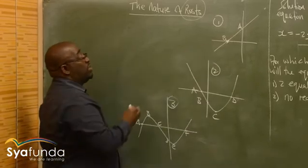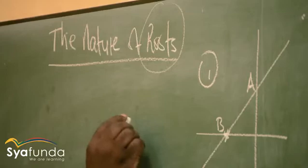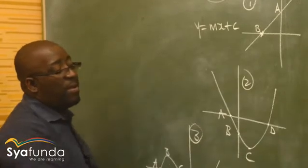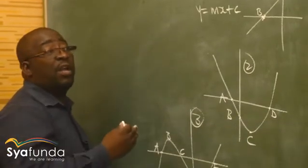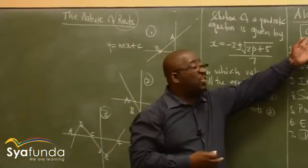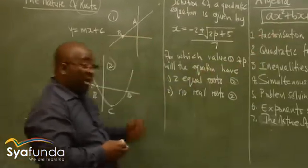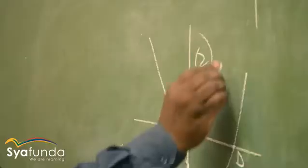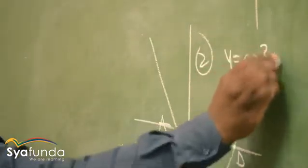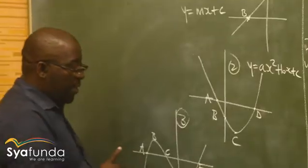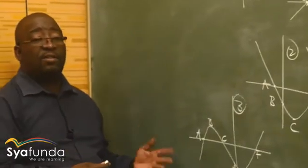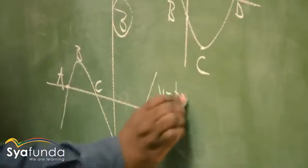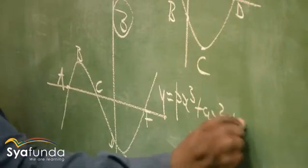This straight line graph has one root and its equation is y equals mx plus c. The second graph is a parabola, or quadratic graph, with equation y equals ax squared plus bx plus c. The third graph is a cubic function — that will be dealt with in calculus — with equation y equals px cubed plus ax squared plus bx plus c.